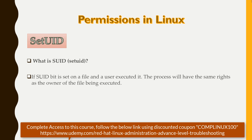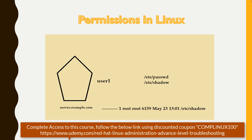To make it easier to understand, let's look at a diagram. Here we have a server — server.example.com — and user1 exists on it as a normal user. We have two important files: /etc/passwd, which keeps information about users — username, user ID, group, group ID, comments, and shell — and /etc/shadow, which stores encrypted passwords. The /etc/shadow file has no permissions at all, meaning no user can read, write, or execute it except root.